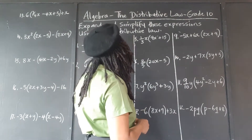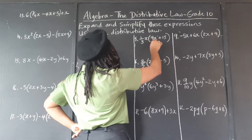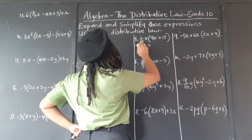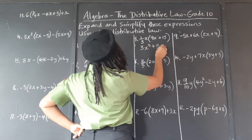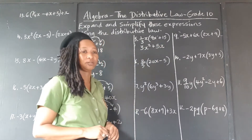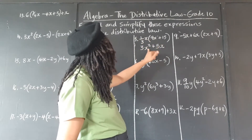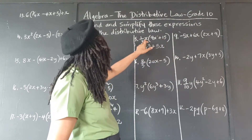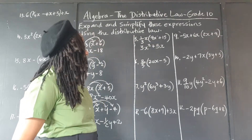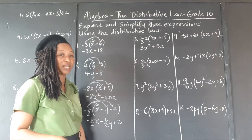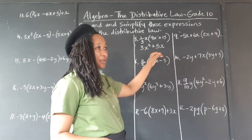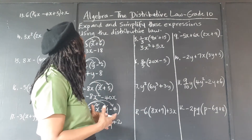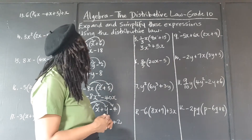We have 1 third x times 9x. 1 third of 9: 3 into 9 goes 3 times. And x times x is x squared. 1 third of 15 is 5, and the x carries through. The x is multiplied here to give x squared; the 15 doesn't have an x, so we find 1 third of 15, which is 5, and put back the x. So 3x squared plus 5x cannot be simplified any further — we have an x squared term and an x term, two different degrees. This is our final answer.